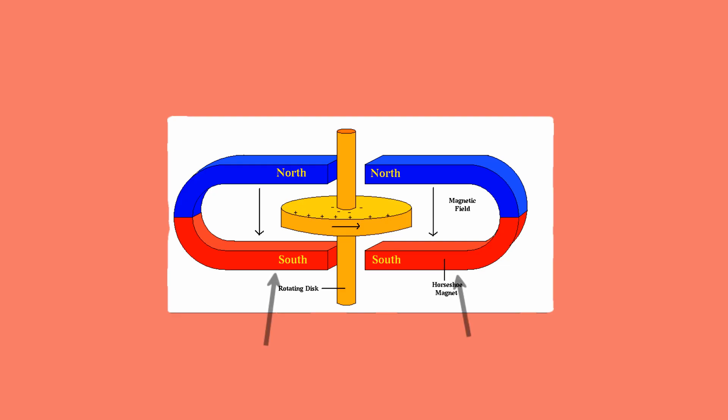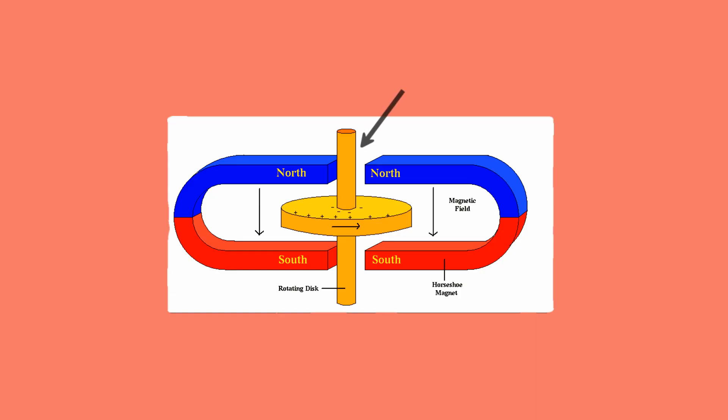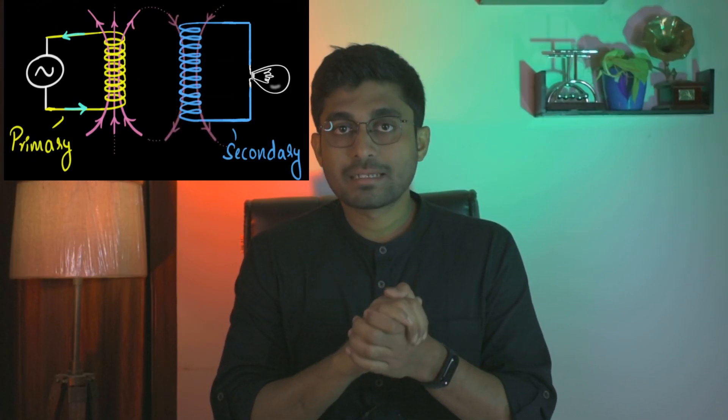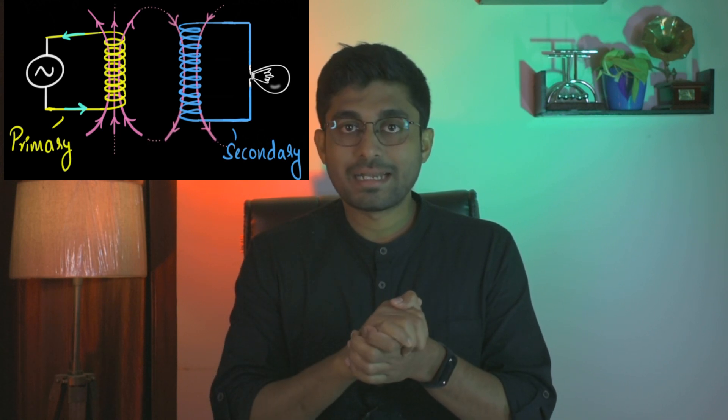In a generator and dynamo, there is a strong static magnetic field component called the stator. There is also a rotating magnetic field component called the rotor. The rotating magnetic field cuts across the static magnetic field lines to produce a stronger secondary magnetic field and electricity. This is the dynamo theory.